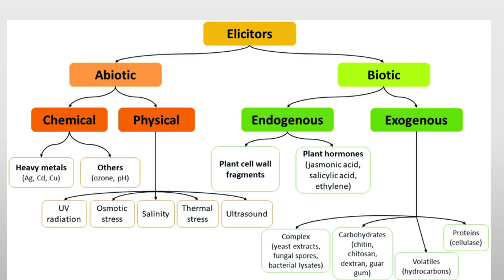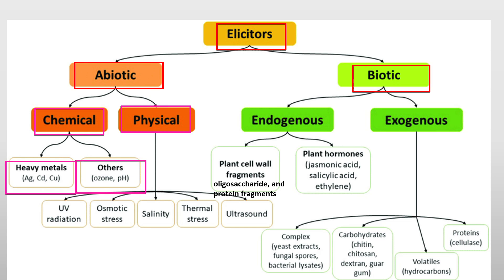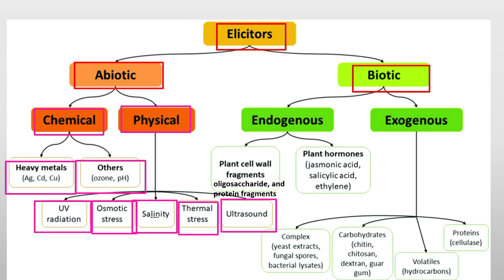Elicitors are of two types: abiotic and biotic. Abiotic elicitors are chemical and physical. Chemical abiotic elicitors include heavy metals like silver, cadmium, copper, ozone, and pH control. Physical abiotic elicitors include UV radiation, osmotic stress, salinity, temperature stress, and ultrasound.